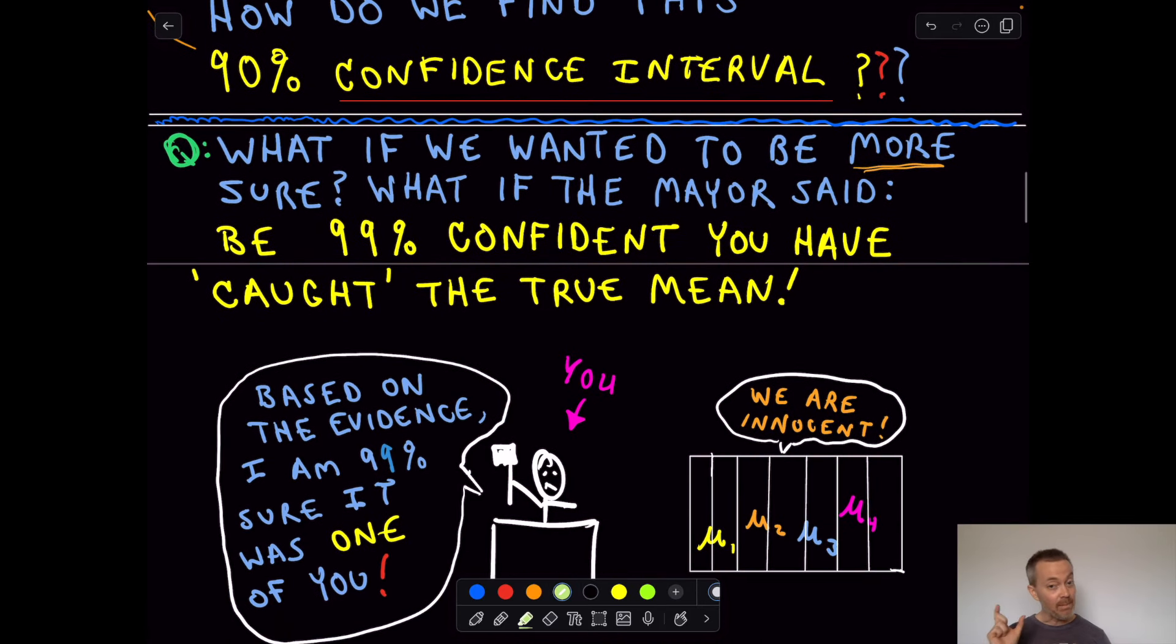You know, what if I want to be 99% sure I've got the true commute time? And I say, well, okay, I'll call you back. How do we answer these questions? How did I give that first interval to the mayor? What did I do? Well, let's look at that.